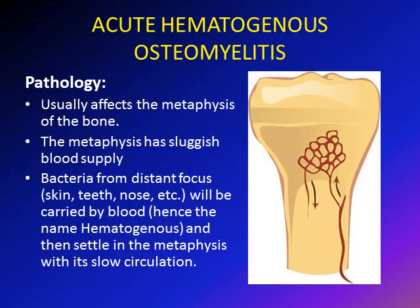The pathology of acute hematogenous osteomyelitis occurs in the metaphysis — the area of bone adjacent to the physis, or growth plate. It affects the metaphysis mainly because of its sluggish blood flow. Blood comes in from afferent arterioles, becomes very slow here, then returns via venous sinusoids, which is why infection settles in this region.